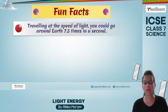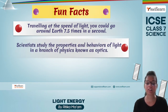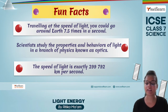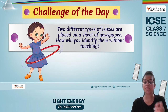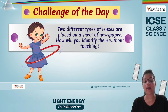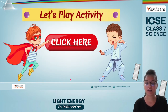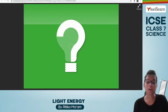Fun facts: traveling at the speed of light, you could go around the Earth 7.5 times in a second — that is how fast light travels. Scientists study the properties and behaviors of light in a branch of physics known as optics. The speed of light is exactly 299,792 kilometers per second. Here's an activity: two different types of lenses are placed on a sheet of paper — how will you identify them without touching? If the letters appear larger than usual, the lens is convex; if the letters appear smaller, the lens is concave.